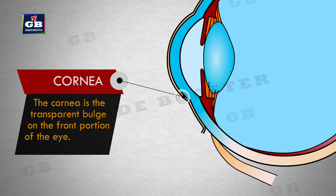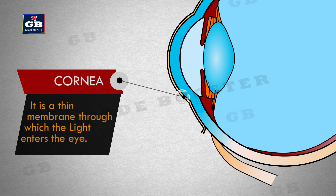This is the cornea. The cornea is the transparent bulge on the front portion of the eye. It is a thin membrane through which light enters the eye.